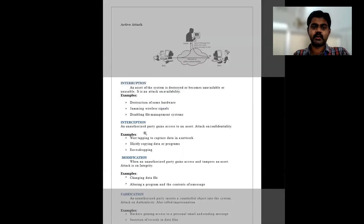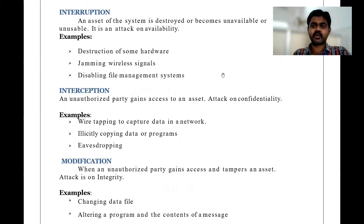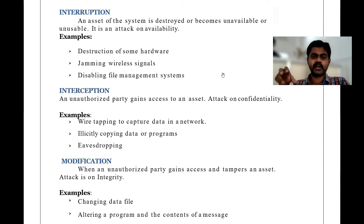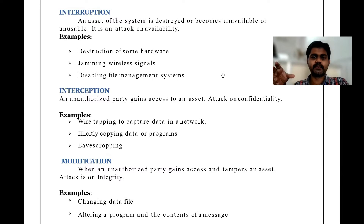First, we will discuss about interruption. What is interruption? An asset of the system is destroyed or becomes unavailable or unusable. It is an attack on availability. Destroyed means all the contents will be lost — unavailable and unusable — so we can't use it further. This is an attack on availability.